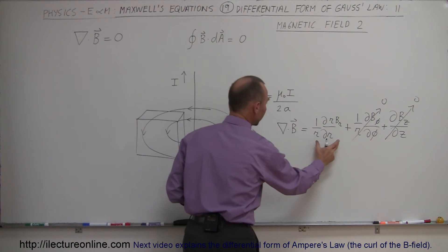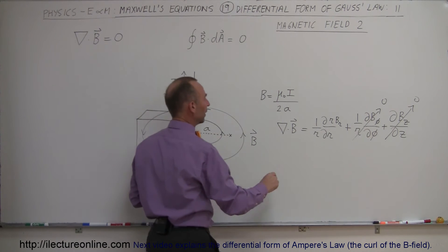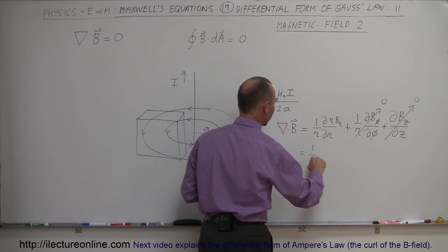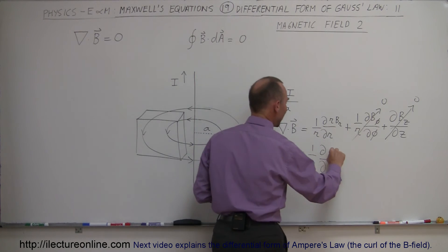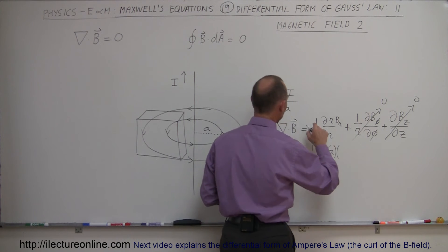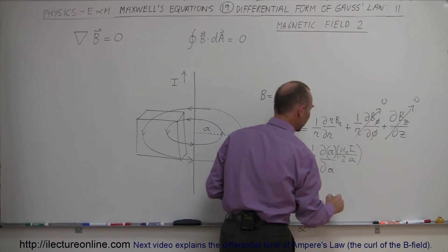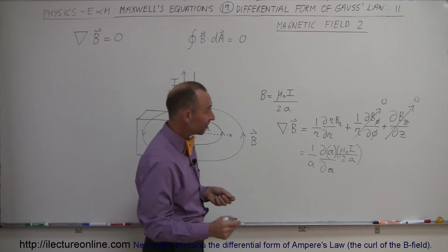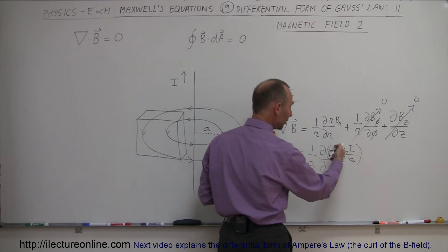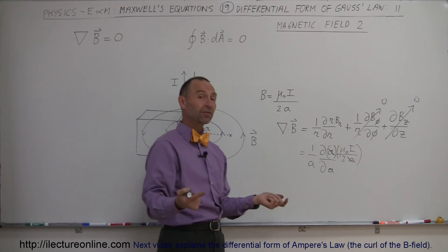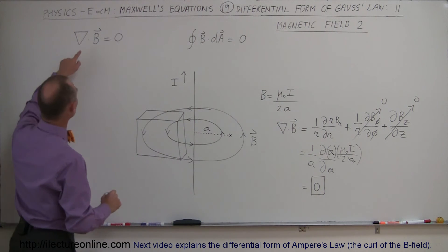So all we have to do is take the derivative of this. Now instead of using r we're going to use the variable a, a being the distance from the wire. So this becomes 1 over a times the partial derivative with respect to a of a times this quantity which is mu sub naught times I divided by 2a. Notice in this case the a's cancel out and all we're doing now is take the derivative with respect to a of a constant and of course the derivative of a constant equals zero. So this whole thing becomes equal to zero which is what is indicated by the divergence here.